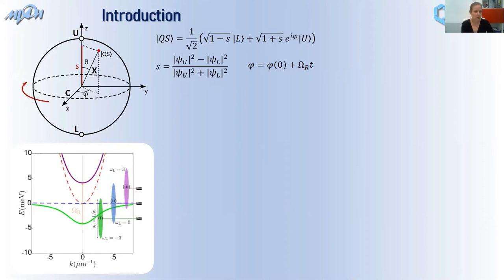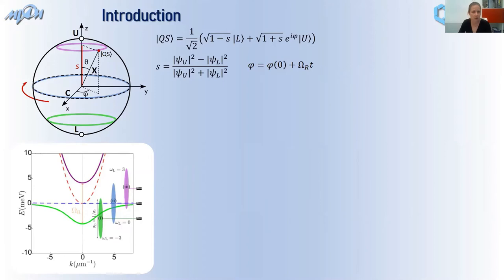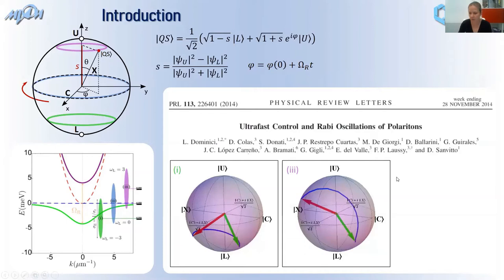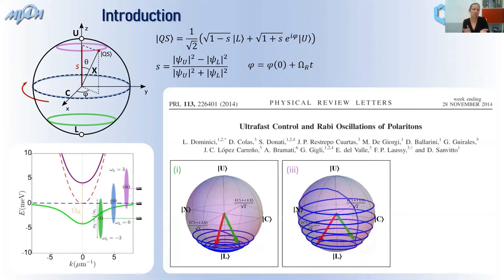This is the idealistic picture without any decay. If you excite your system with the right pulse triggering the Rabi oscillations, depending on the energy of your excitation, you can get rigid rotation of the state on the sphere — in the upper hemisphere, on the equator if you excite exactly in the middle between upper and lower polariton, or in the lower hemisphere if you excite closer to the lower polariton state. In reality, we have decay, and the decay of the upper polariton is much faster than the lower polariton, so the state not only rotates but also creeps down from the upper to the lower hemisphere until the system reaches the lower polariton state and Rabi oscillations stop.